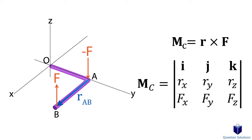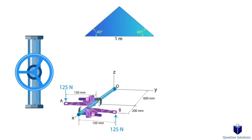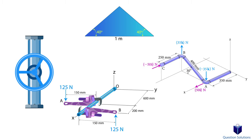For example, here we can use a position vector from A to B to find the couple moment. One thing to keep in mind is that since we chose a position vector going from A to B, we ignore the force at A — that's because force one can't create a moment about point A. Instead, we find the couple moment by assuming that the pipe turns about point A. If you had a position vector from B to A, then we would ignore the force at B instead.